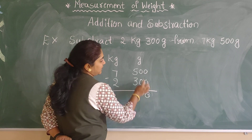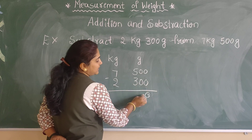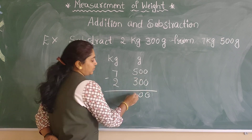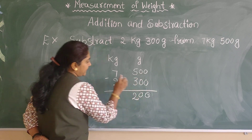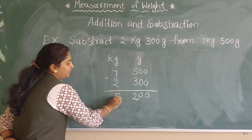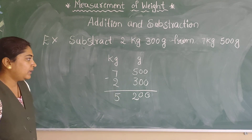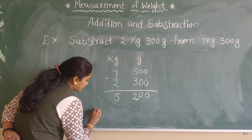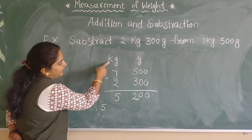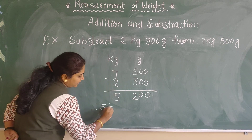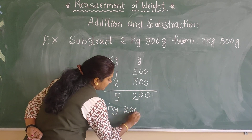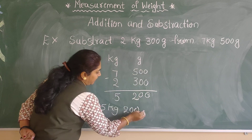0 minus 0 is 0, 0 minus 0 is 0, 5 minus 3 is 2, and 7 minus 2 is 5. So the answer is 5 kg 200 gram.